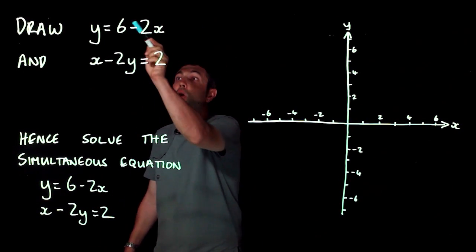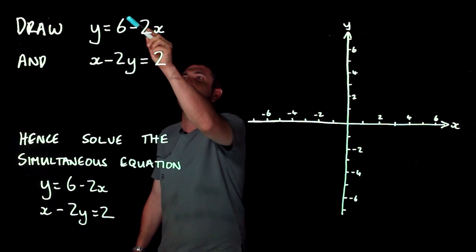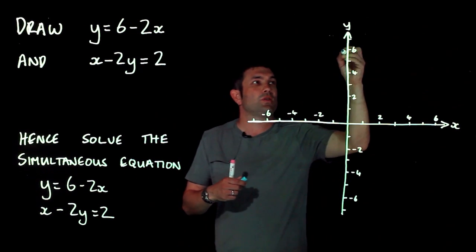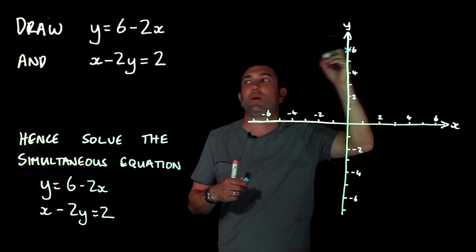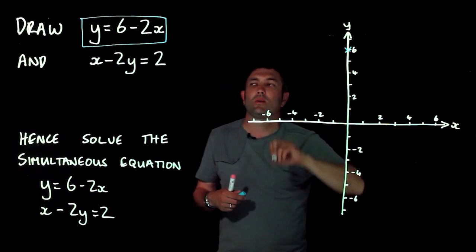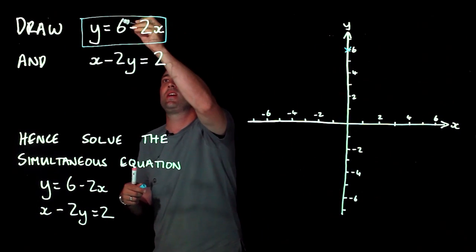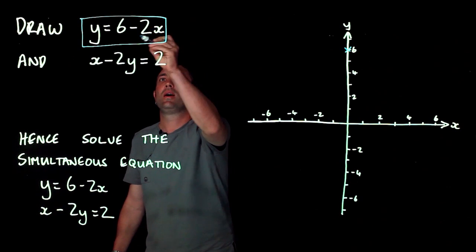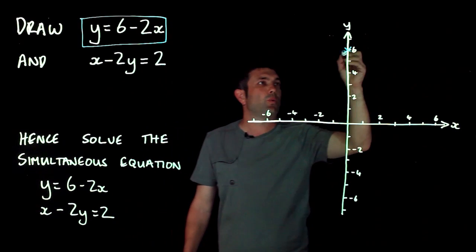We've done this before. Y equals something - we always do the number on its own which is where it crosses, the y-intercept. I'm going to do this in blue. If I draw a little blue rectangle around that, it shows you that it's going to be blue on my graph. It crosses at six because six is a number on its own.